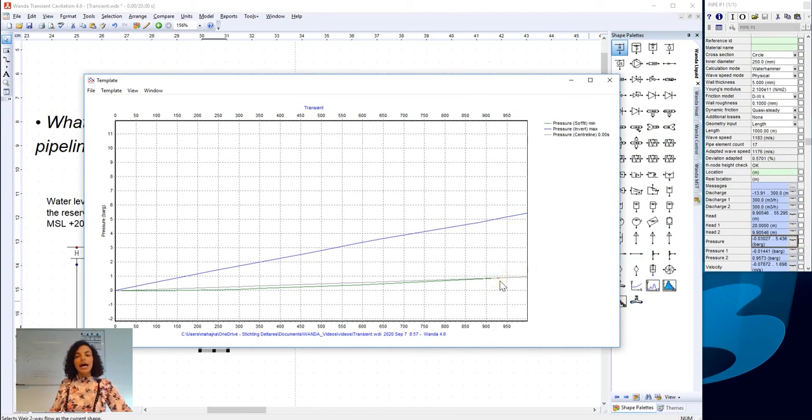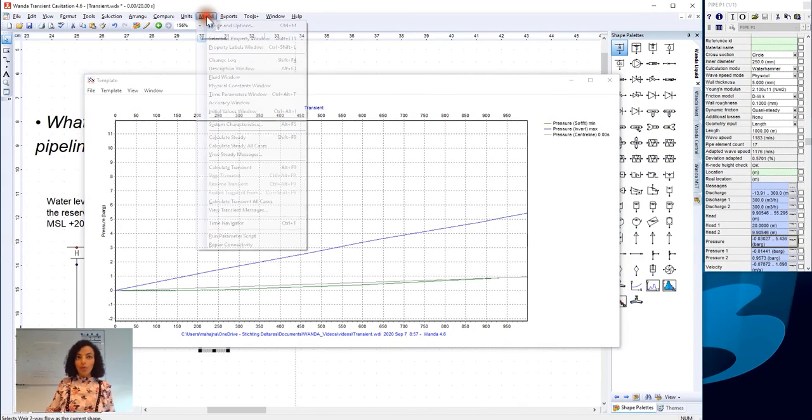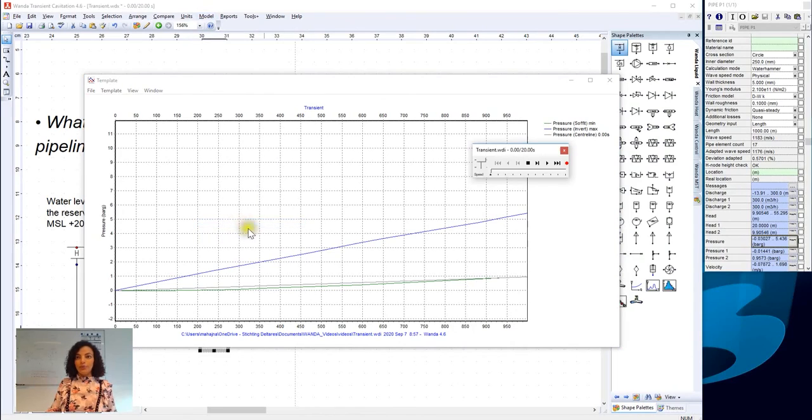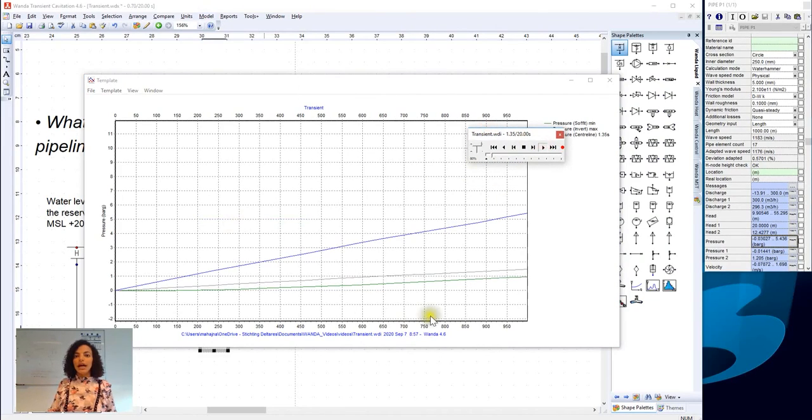We could also look at how the pressure wave evolves in the pipeline system in time. By going to model, time navigator. And in the time navigator, we can decrease the speed of animation or increase it. And when playing, we will see how the pressure wave evolves in the system.